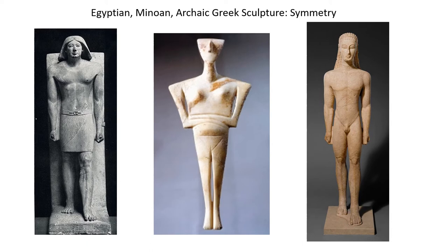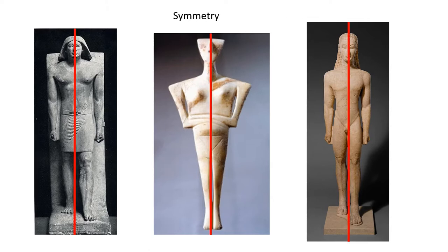The first type of composition we're going to look at is symmetry. These ancient Egyptian and Minoan and early Greek sculptures are symmetrical, meaning that each side is a mirror image of the other if you divide the figure in half, or very close. If you stand this way, you'll find it to be somewhat formal, maybe a little bit rigid, but that was the way these early civilizations sculpted the human body.